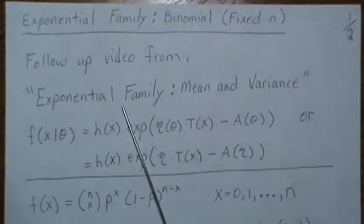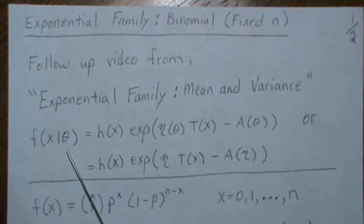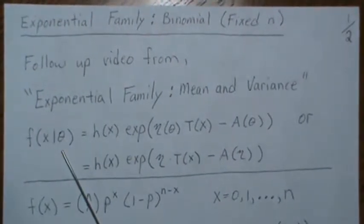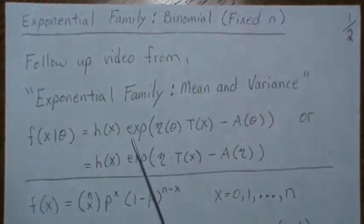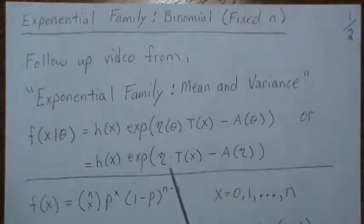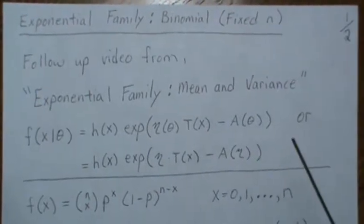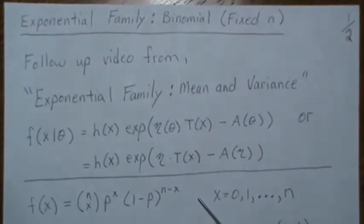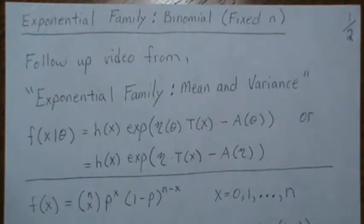In this video we showed that if the distribution or probability mass function can be written as one of these forms, it's considered the exponential family. The second form here is called the canonical form. It really helps us out in finding the mean and the variance of our sufficient statistic.